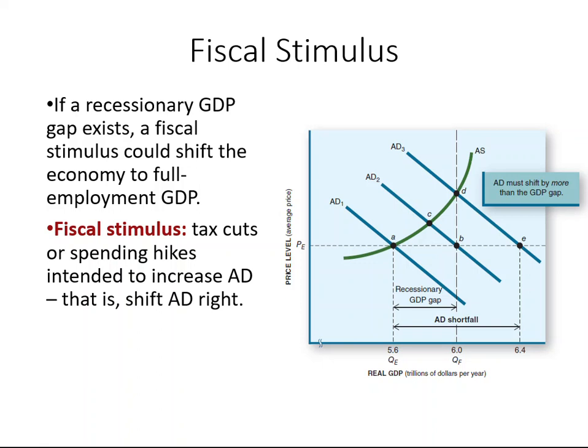Tax cuts or spending hikes are the main tools. If the government spends more, this naturally shifts the AD curve to the right, because aggregate demand includes consumption, investment, government purchases, and net exports. If government spending goes toward either the labor market or businesses, it naturally increases consumer and business disposable income, so they will be able to spend more.